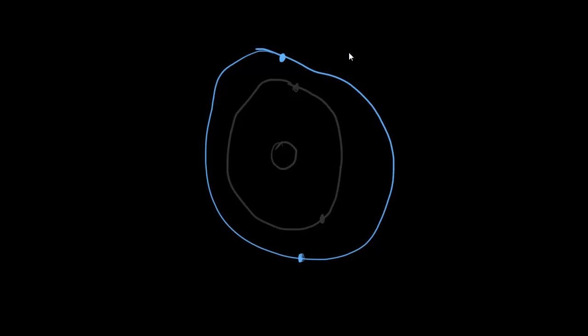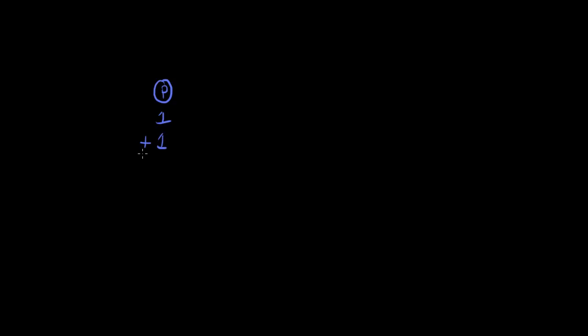The electrons exist in orbitals which have specific energy levels around the nucleus of the atom. Now there are three main particles which make up the atom. The first one is protons, which have a relative mass of one — this relative mass is relative to the protons themselves — and they have a relative charge of plus one.